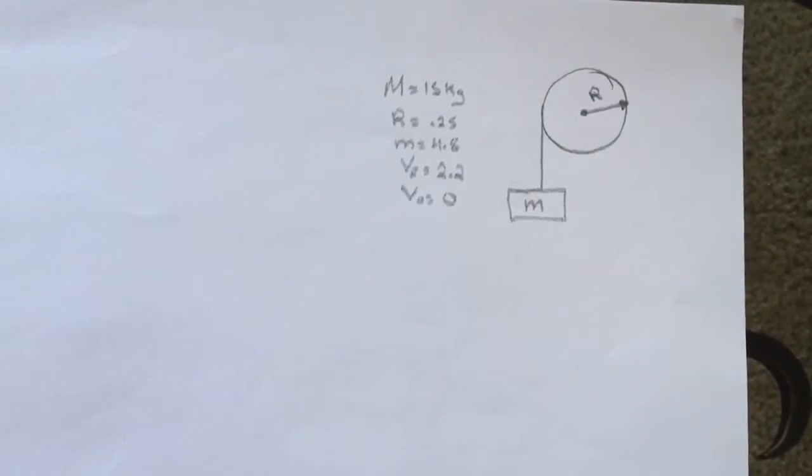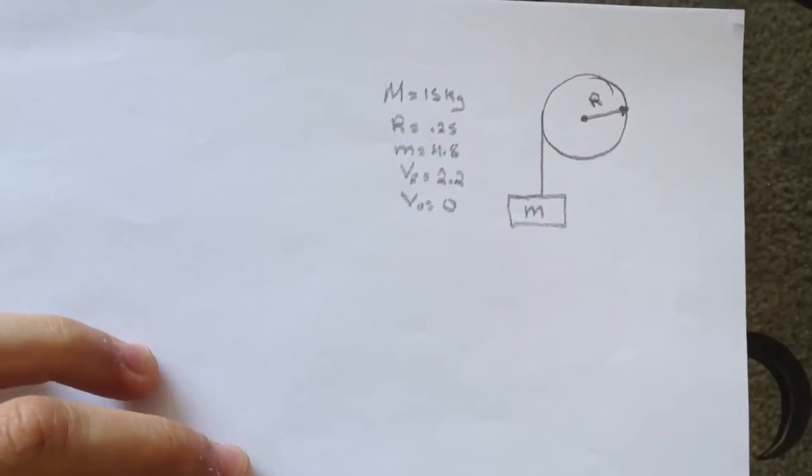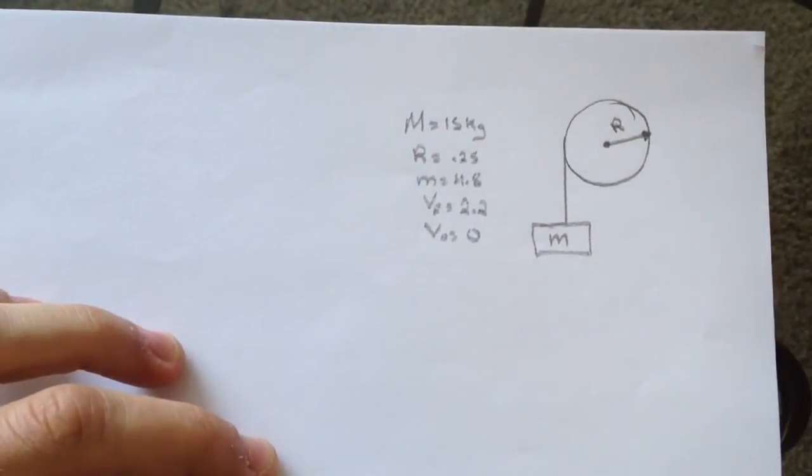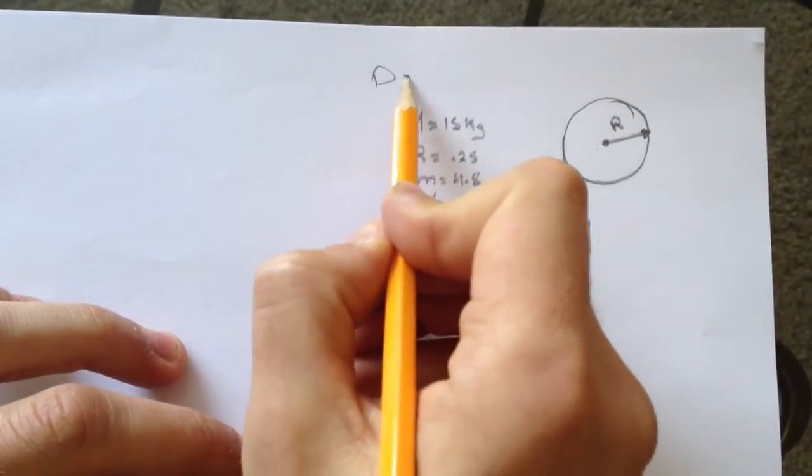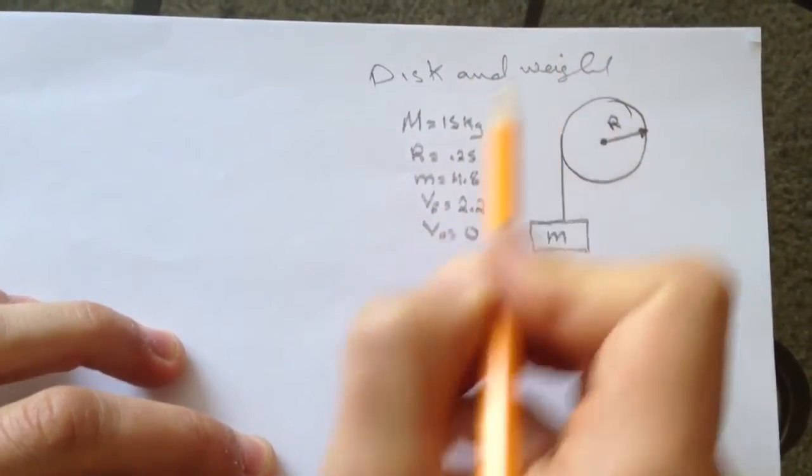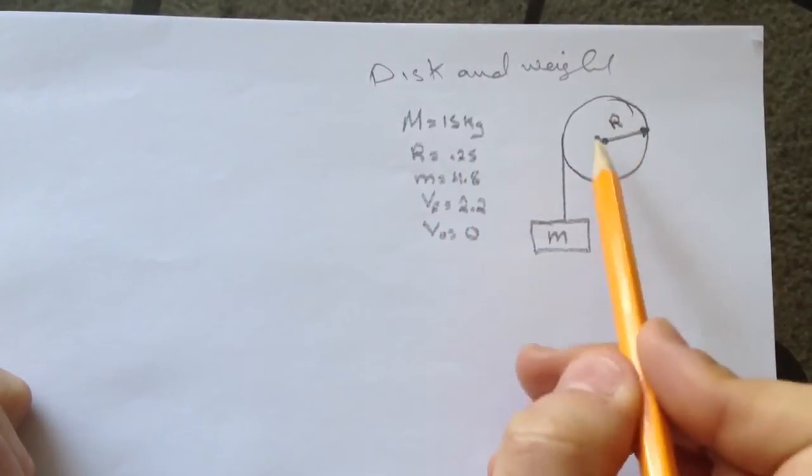Hi guys, this is Todor for Smart Physics. It's not electric and magnetism, but this is just rotational dynamics. This problem is called the disc and weight.